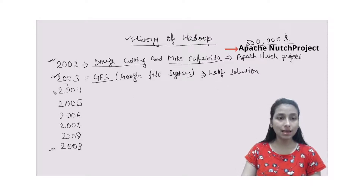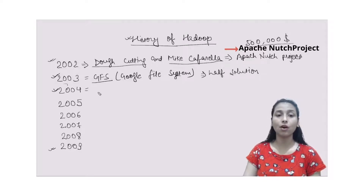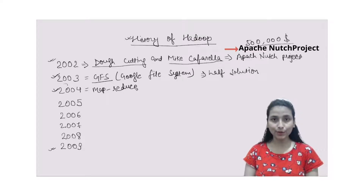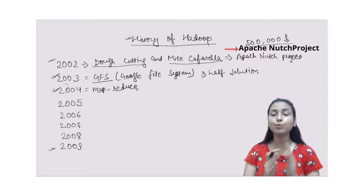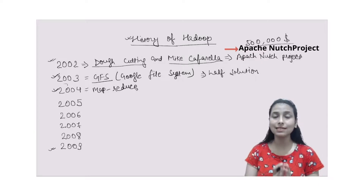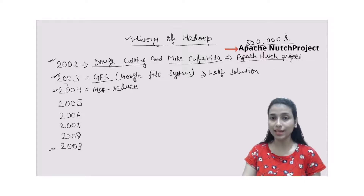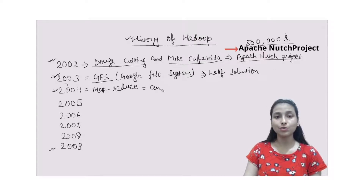Moving to the year 2004, Google released another paper named MapReduce. In this MapReduce paper, they described processing huge amounts of data in a distributed fashion. This proved to be another half solution for Doug Cutting and Mike Cafarella's Apache Nutch Project.